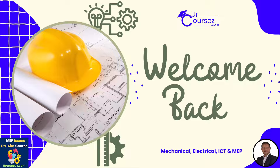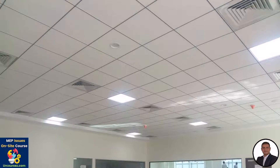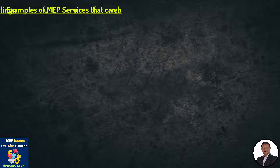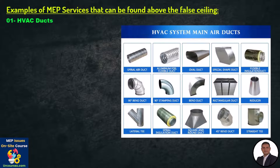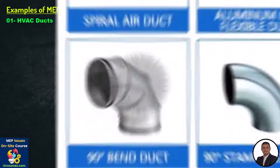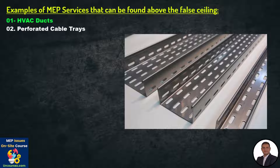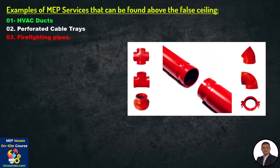Hello and welcome back. In this lecture we will talk about another issue that can be found in your project. Where you have a false ceiling, MEP services will be installed above it. Here are examples of the MEP services that can be found above the false ceiling — you can find some or all of them in the same space: 1) HVAC ducts, 2) perforated cable trays, 3) firefighting pipes.